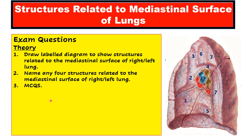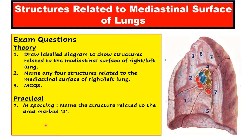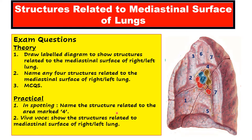I have given some MCQs at the end of this video. In practical examination, in spotting, you can be asked to name the structure related to the area marked. A flag can be put there and you can be asked to name that structure related to that particular area. Then in viva voce, you will be asked to show the structures related to the mediastinal surface of whichever lung is in your hand - it can be either right or left lung.